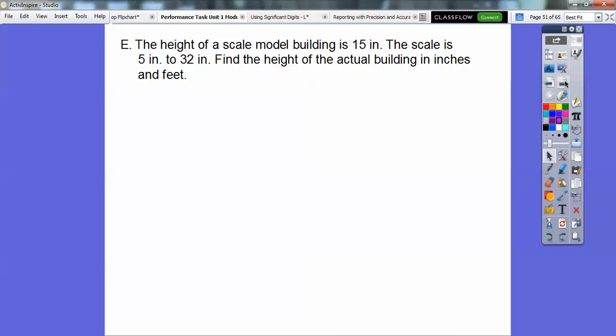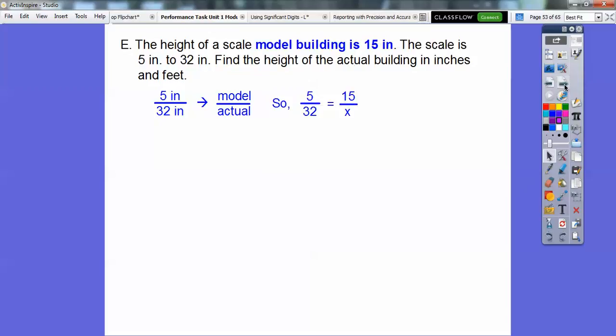The height of a scale model building is 15 inches. The scale is 5 inches to 32 inches. Find the height of the actual building in inches and feet. So this time I did the model over the actual. The book likes doing the actual over the model, but it's here. It's already set up. 5 over 32 is going to be, this is the model's height, and this is the actual height right here. So for every 5 inches, the actual height is 32 inches. So find the actual height. The scale model is 15, so that's going to go on top. So 5 over 32 is going to equal 15 over x.